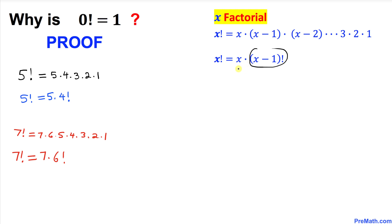So let me go ahead and divide both sides by x. So this x and x cancels out. So we got x minus 1 factorial equals to x factorial divided by x. So thus we got x minus 1 factorial equal to x factorial divided by x.